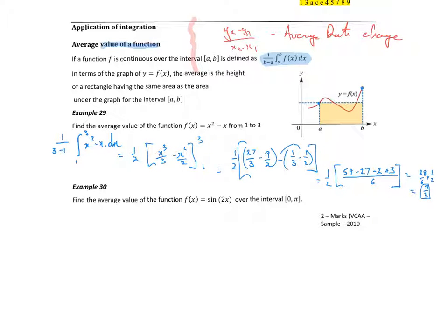That gives us 57 minus 29, which is 28, so we get 28 on 6 times a half, which is 14 on 6, which is 7 on 3. So that's the average value of the function. Does that seem reasonable? At x equal to 1 my function is 0, at x equal to 3 my function is 6, so somewhere between those two values is reasonable.